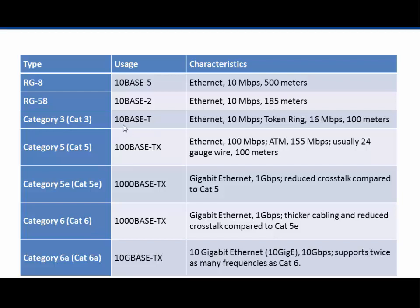10BaseT was the first unshielded twisted pair version of copper cabling, using Cat 3 cable. It could be run 100 meters or 300 feet and was rated at 10 megabits per second. Fast Ethernet, or 100BaseTX, used Cat 5 cable. An advance over Cat 5 was Cat 5e, which could be used on gigabit networks. Cat 5e has more twists per meter and better termination.